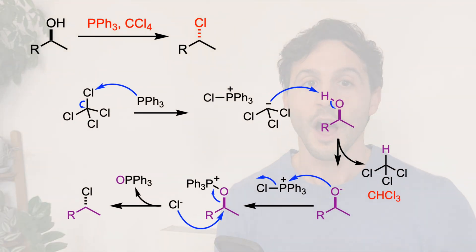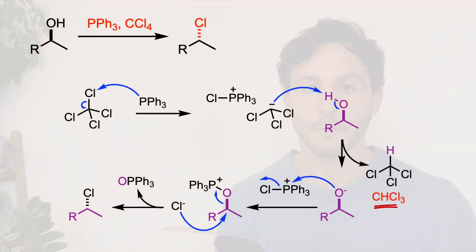Subsequent deprotonation of the alcohol yields chloroform and an alkoxide derivative. The alkoxide attacks the phosphonium salt at the phosphorus center to generate an oxyphosphonium intermediate.